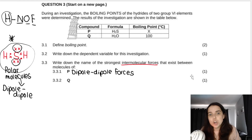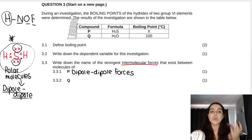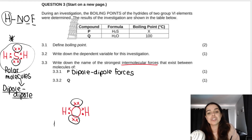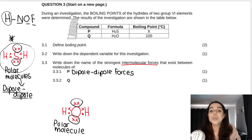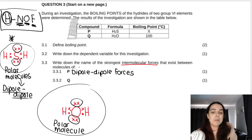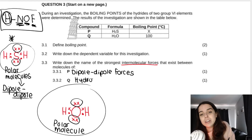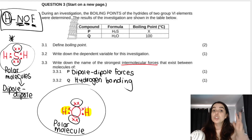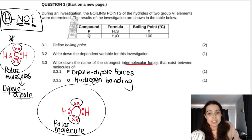For compound Q, which is water (H₂O), it's also a polar molecule — same Lewis dot diagram structure as H₂S with two lone pairs on the central atom and an asymmetrical charge distribution. It also has dipole-dipole forces. However, in water, hydrogen is bonded to oxygen, so it has the special type of dipole-dipole forces called hydrogen bonding. Water has two sites for hydrogen bonding — be mindful of that for future questions.